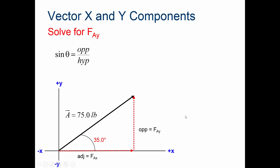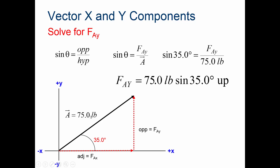Now to solve for FAY, the y component, we use sine theta — opposite over hypotenuse. So sine 35 degrees equals FAY over 75 pounds. Rearranging, FAY equals 75 pounds times sine 35 degrees. That gives FAY equal to 43 pounds, and it's positive because it is going up, which is positive in the y direction.